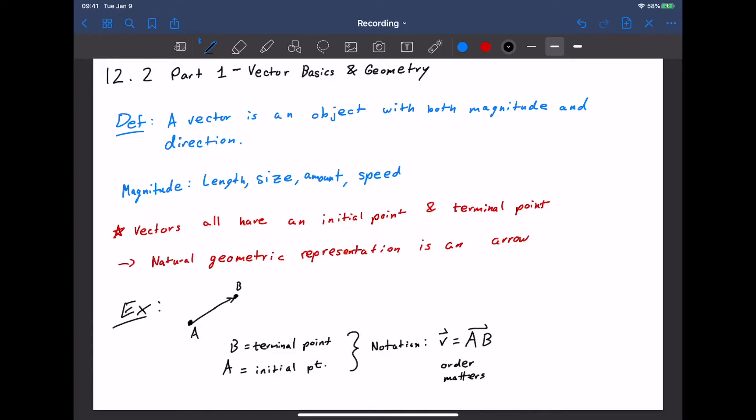The order you label those points matters because the arrow is only going one way. If you remember the notation you would use for a line in geometry, it would have an arrow on both sides, usually, or no arrows at all.